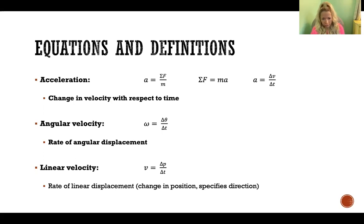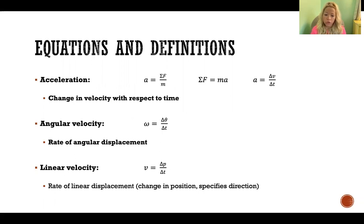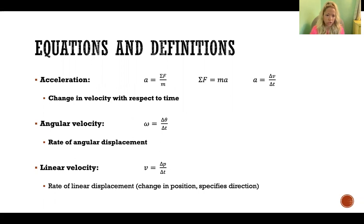To clarify, velocity — both angular and linear — takes into account speed: how fast the movement is happening. But it also specifies position because it's the rate of linear or angular displacement. So it specifies the direction of the movement and how fast that is changing. To have a change in velocity means we have a change in speed, a change in direction, or both.